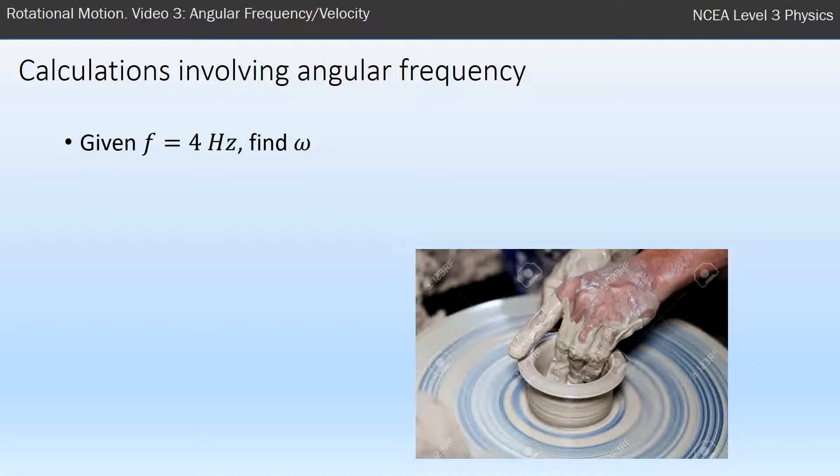Given something that has a frequency of 4 hertz, or 4 rotations per second, and I've asked you to find omega, how would you go about that? You just use the formula omega equals 2 pi f, and just key in the value, 2 times pi times 4 hertz, which if you do on your calculator gives 25 radians per second.